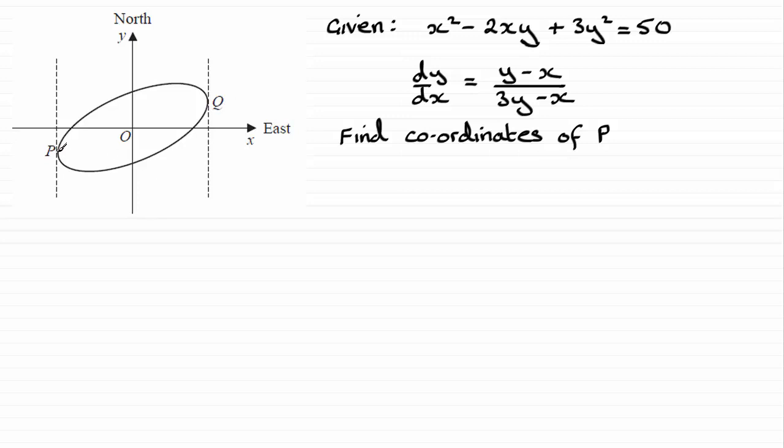Well the gradient at this point P here, you can see the tangent is vertical, that gradient is going to be infinite. And for that gradient to be infinite we would expect the denominator here to be zero, because when you divide something by zero it gives you an infinite or undefined value. So that's what we're going to be working with, we're going to make 3y minus x equals zero.